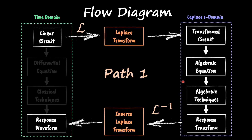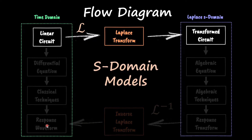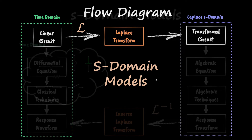Let's focus on path number one and go step by step, also giving an example to show how we go from a linear circuit all the way down to the response waveform. The first thing we're going to do is apply the Laplace transform on top of our linear circuit so we can have our transformed circuit, and we're going to use s-domain models for that.